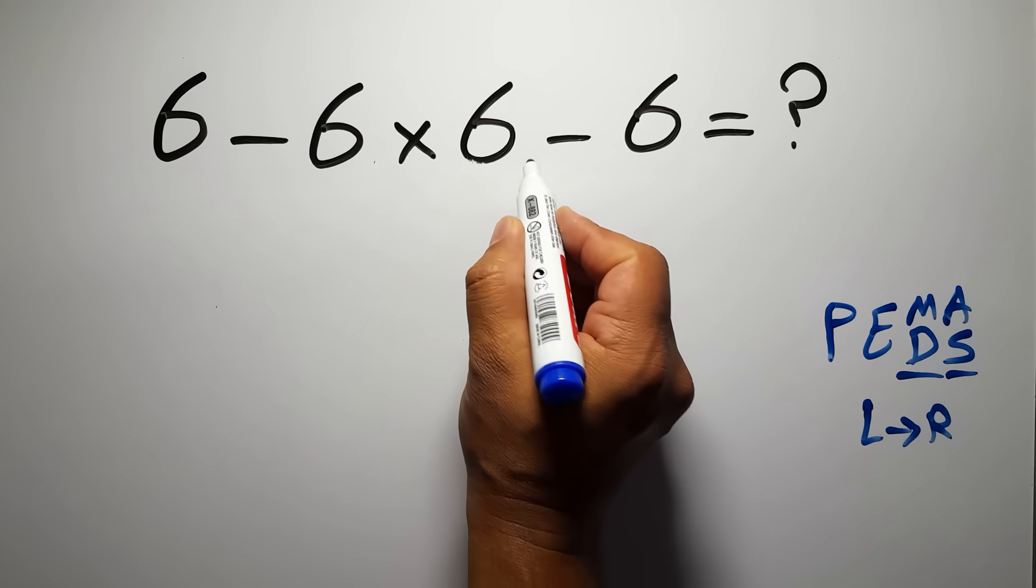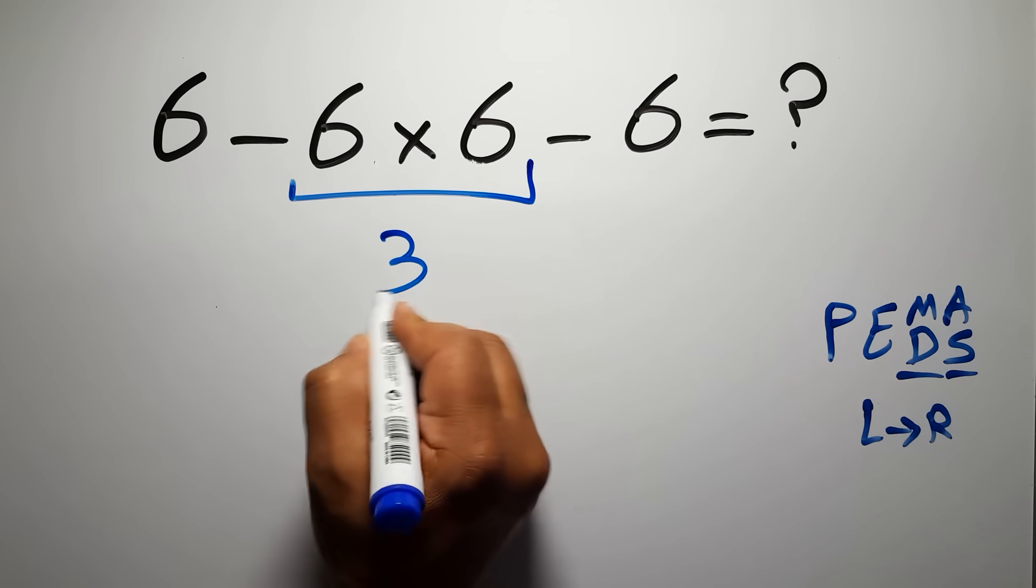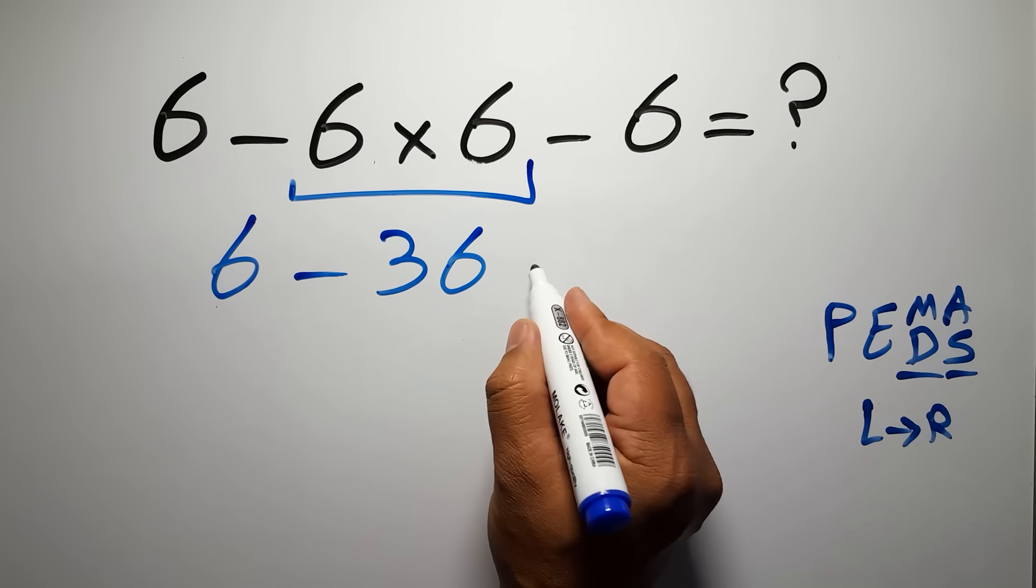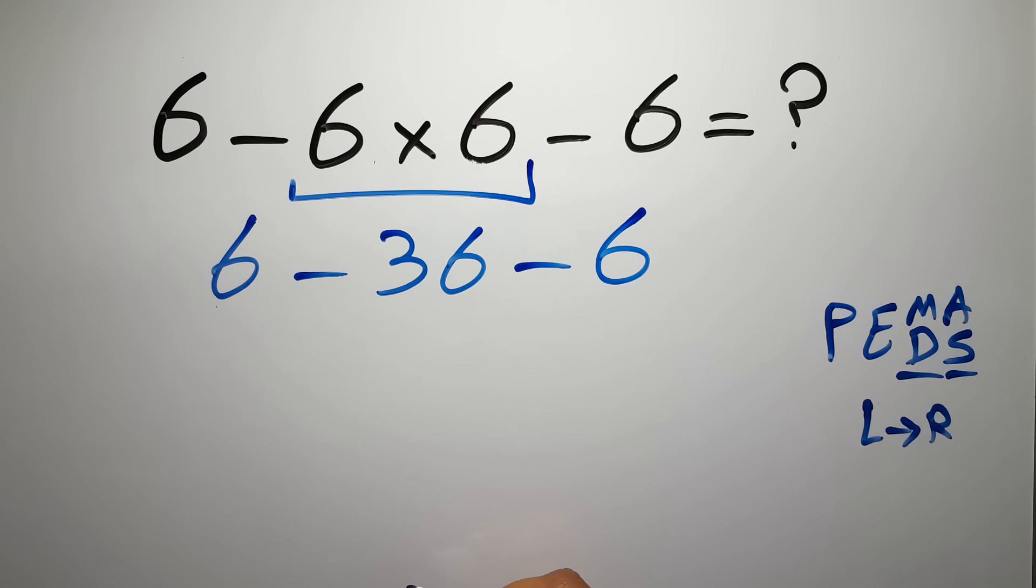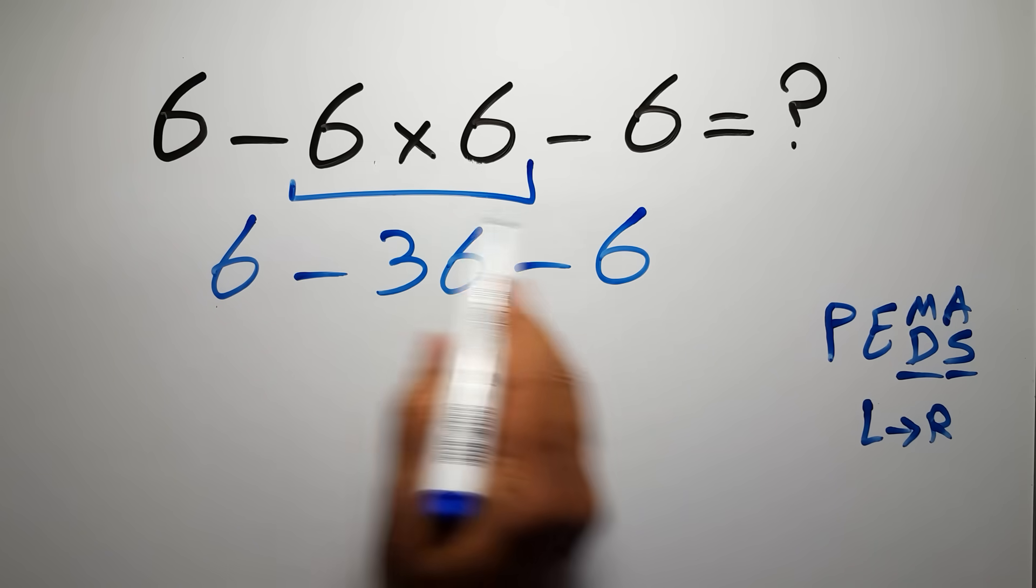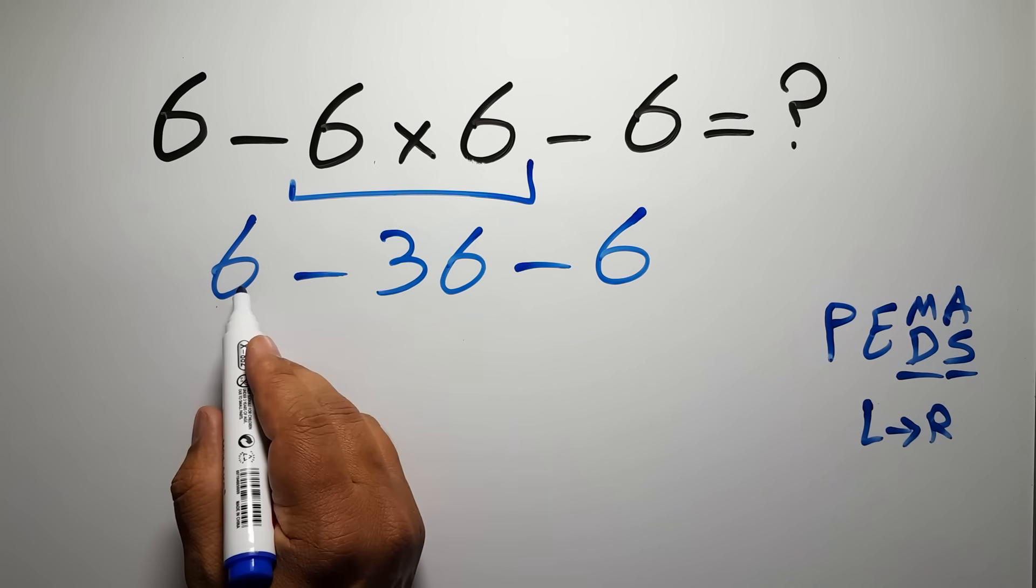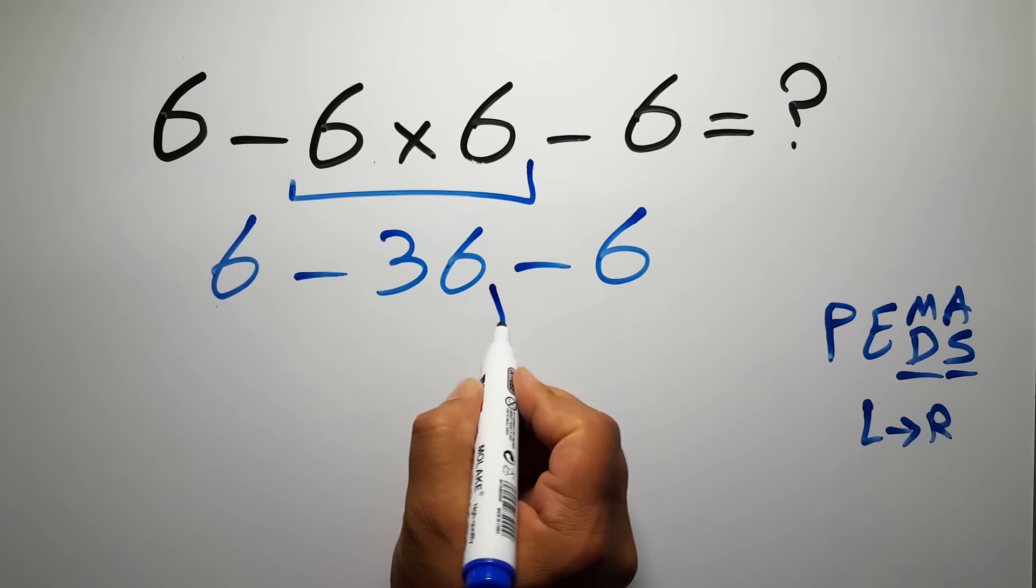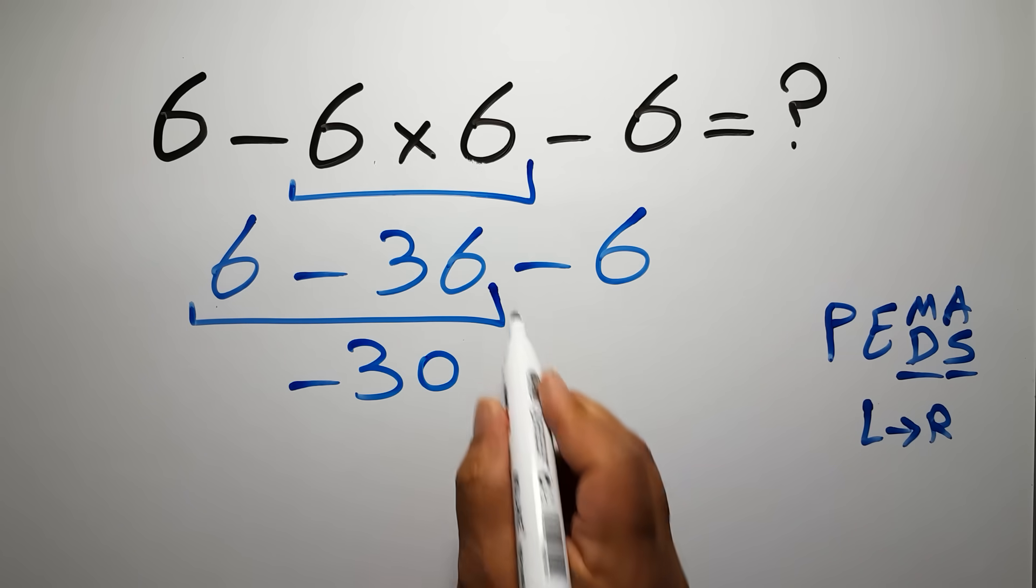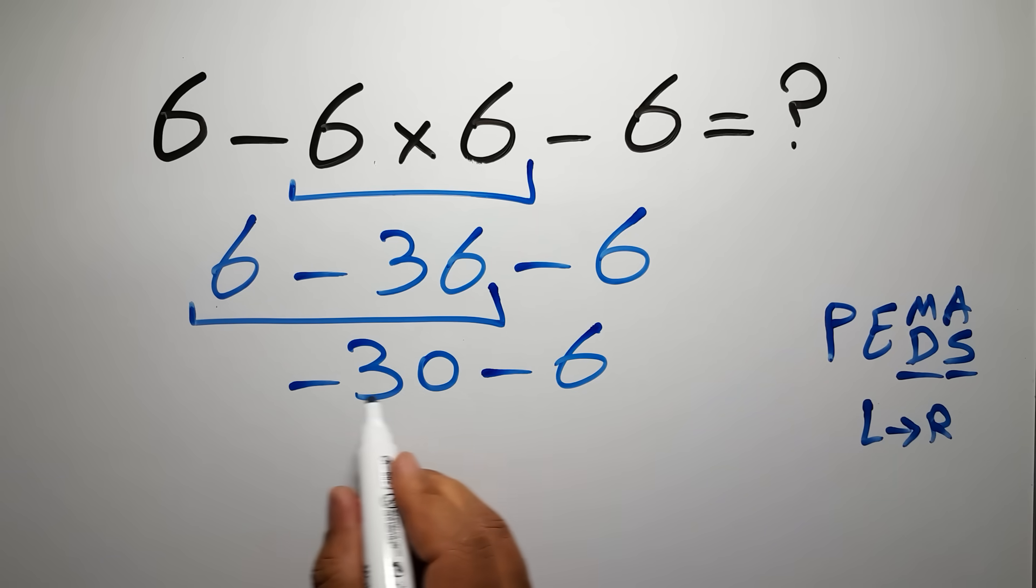So first 6 times 6, which equals 36. So 6 minus 36 minus 6. Now we have two subtractions and we have to work from left to right. First 6 minus 36, which equals negative 30 and minus 6. Negative 30 minus 6 is just negative 36.